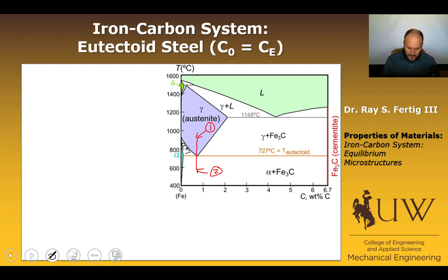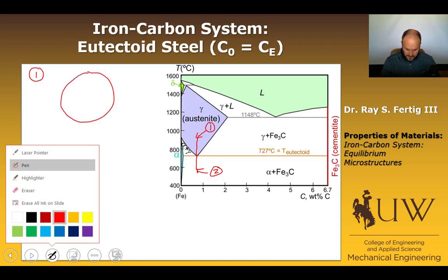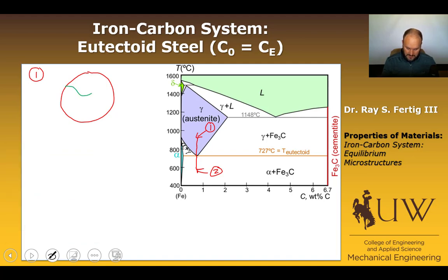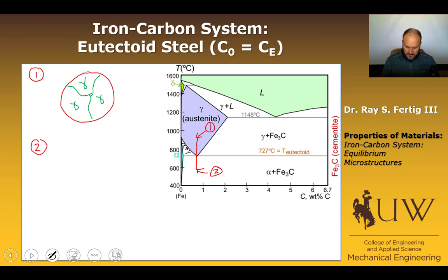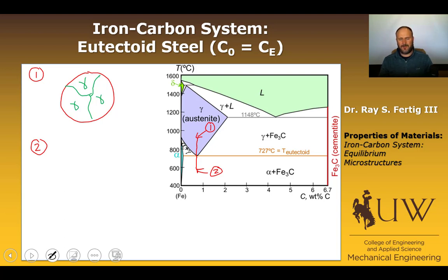Point 1 should be easy — it's all gamma or all austenite, so we just draw a bunch of austenite grains. I'm going to choose green to represent gamma for our austenite. Now, what happens when we go to microstructure 2? We know that when gamma transitions through the eutectoid transformation, gamma goes into an alpha phase and a cementite phase. Alpha has a lower carbon composition than gamma, and cementite has a higher carbon composition than gamma.